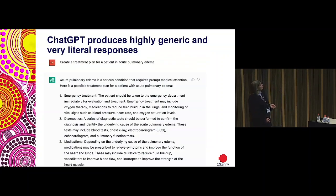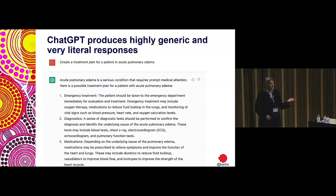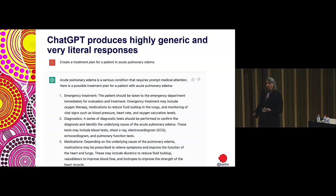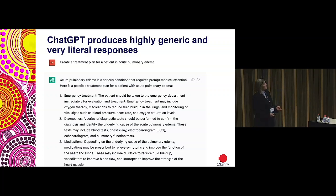One example from ChatGPT relevant to my work: I asked it to create a treatment plan for a patient in acute pulmonary edema, and it basically said take them to the emergency department, run some tests, and prescribe some medication. But I already know the patient is here with me and I know what's wrong with them — the presuppositions of the question are not captured effectively. It's not understanding enough to produce a detailed and meaningful response.